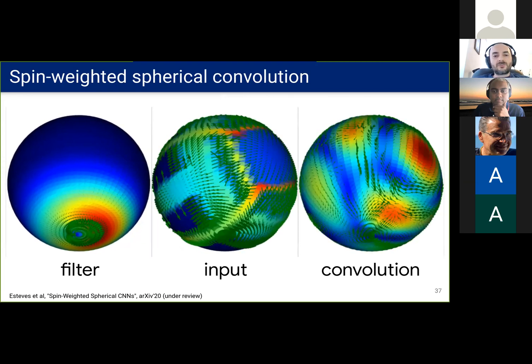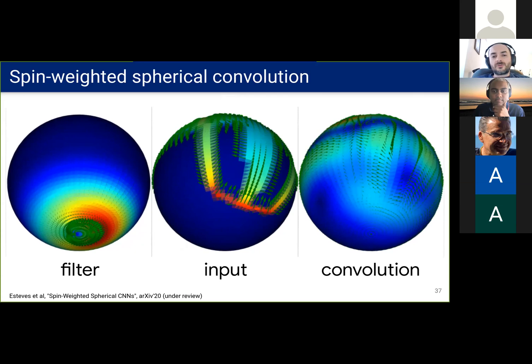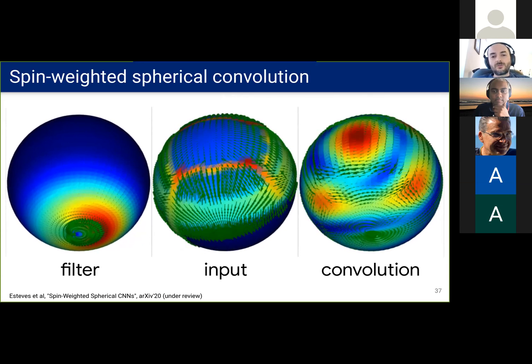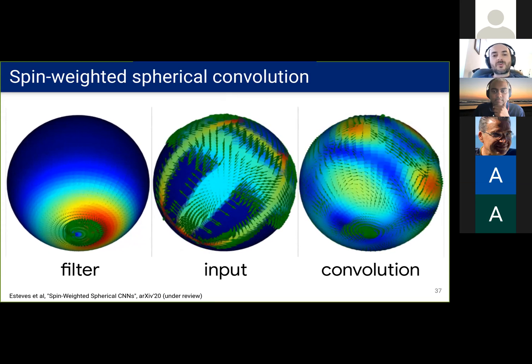It can handle spherical vector fields which previous spherical CNNs could not. We can see that the convolution that we just defined is equivariant as a vector field.